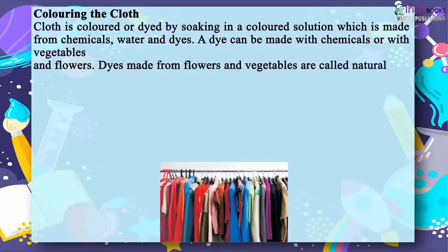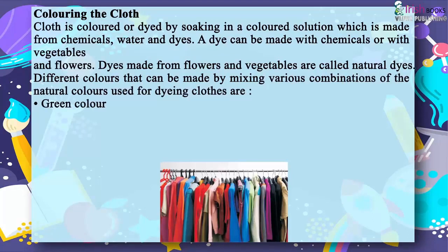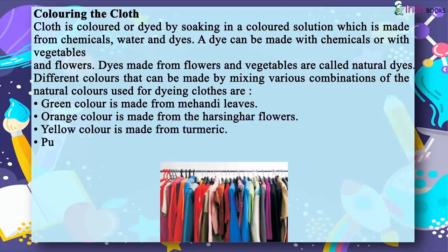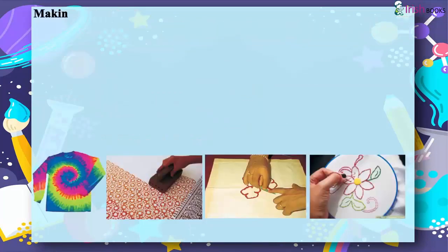Dyes made from flowers and vegetables are called natural dyes. Different colors can be made by mixing various combinations of natural colors used for dyeing clothes. Green color is made from mehndi leaves. Orange color is made from harsinghar flowers. Yellow color is made from turmeric. Purple color is made from blueberries. Black and gray colors are made from blackberries.